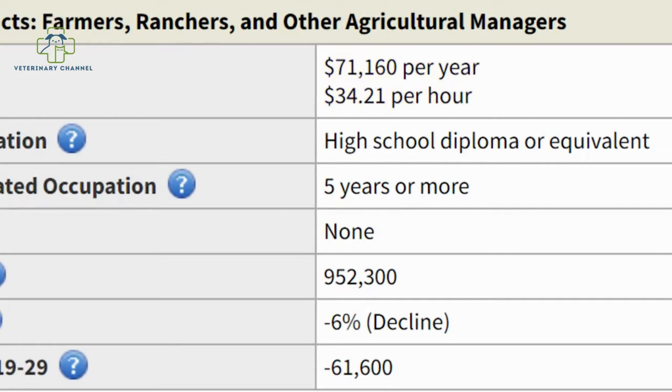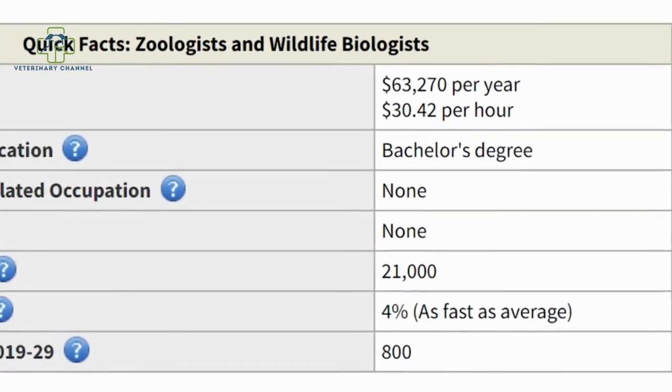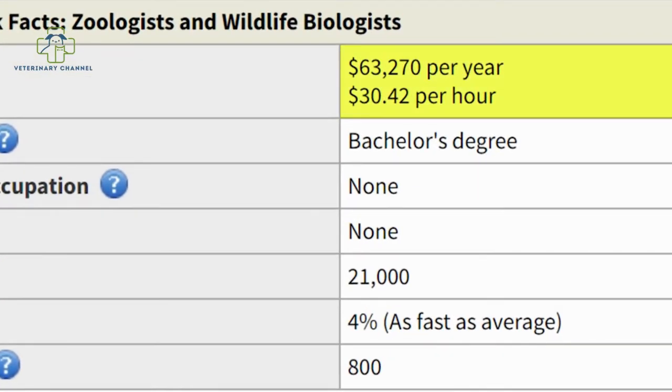But technically, you don't actually have to get a degree to become a farmer. You can do it with just a high school diploma. Another career path you could get into is becoming a zoologist, and they make around $63,000 a year. When it comes to salary, obviously, this is not the most important thing. But I always like to talk about studies on happiness.